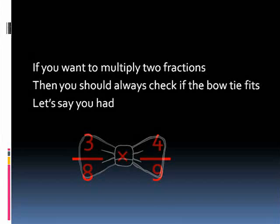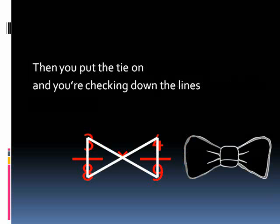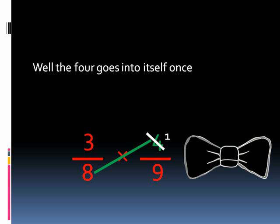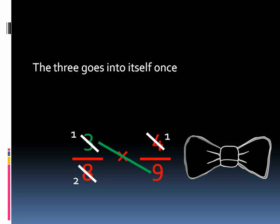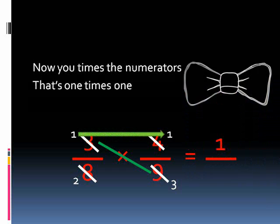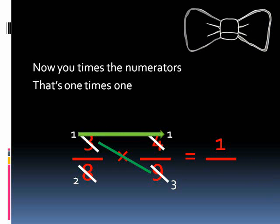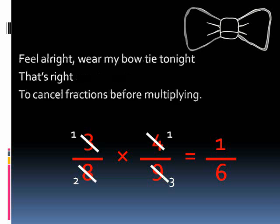Let's say you had 8 over 3 times 4 over 9. Then you put the tie on and you're checking down the line. Well the 4 goes into itself once, and into the 8 twice — this is nice, cause we're making it all simpler. The 3 goes into itself once, and into the 9 three times — this is fun, cause we use the bow tie's lines. Now you times the numerators, that's 1 times 1, and you times the denominators, that's 2 times 3.